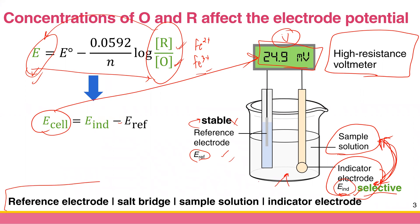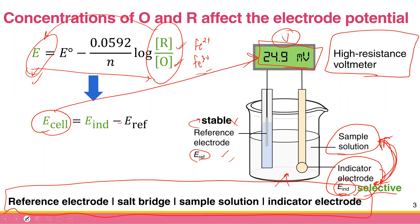You can write the shorthand cell notation here: we put the reference electrode on the left, then a salt bridge — which we'll discuss later — then your sample solution, and then your indicator electrode on the right. That's the basic concept of potentiometry.